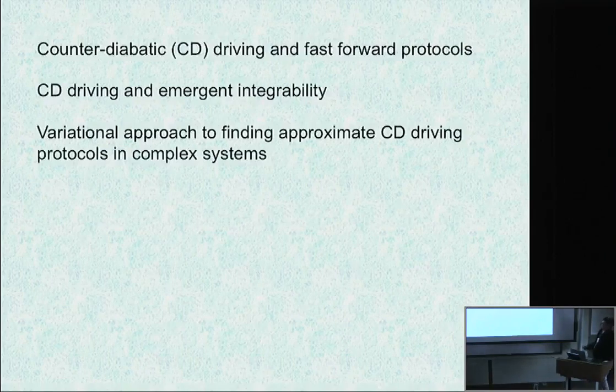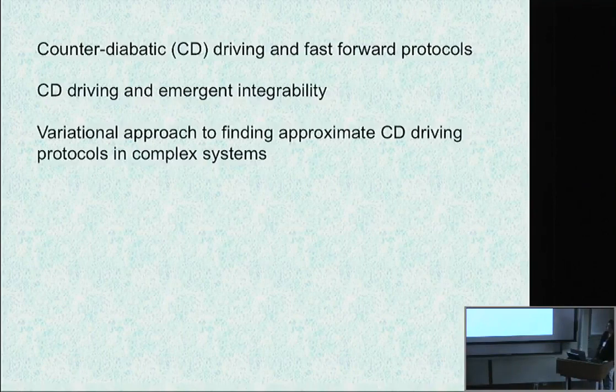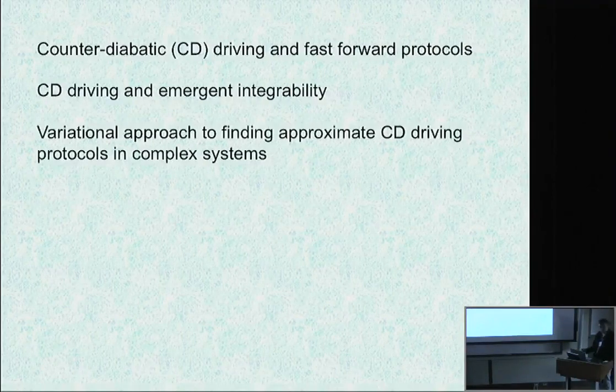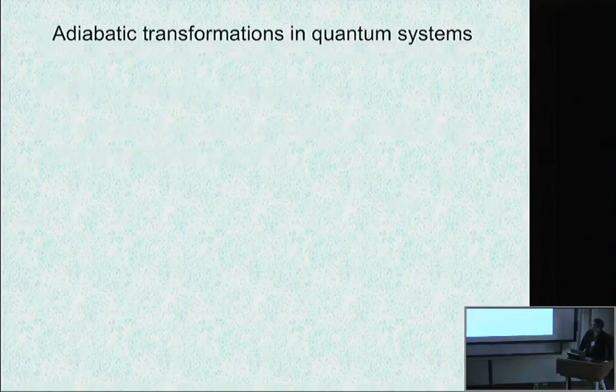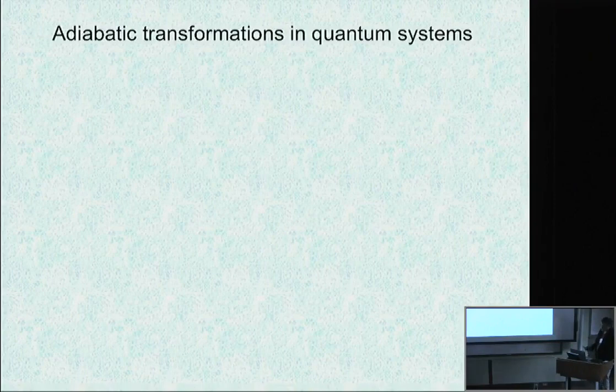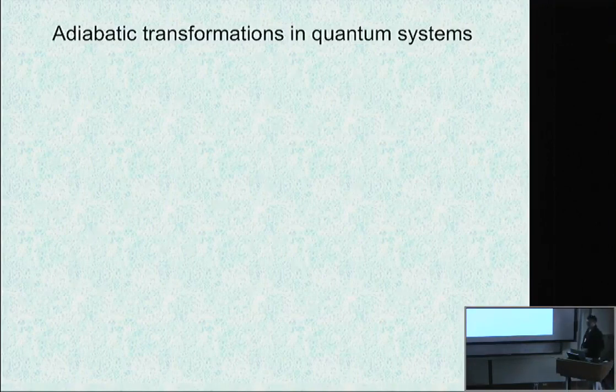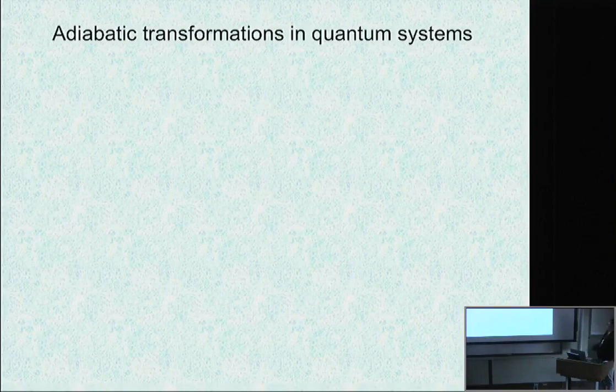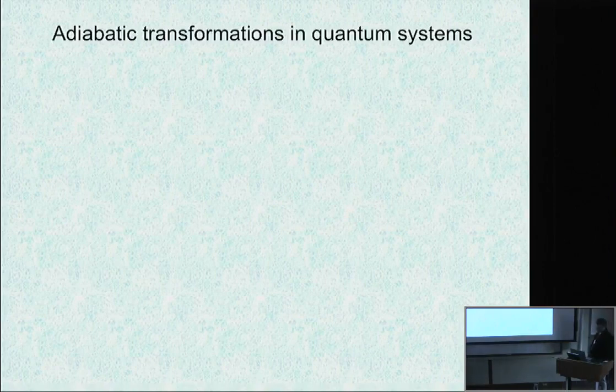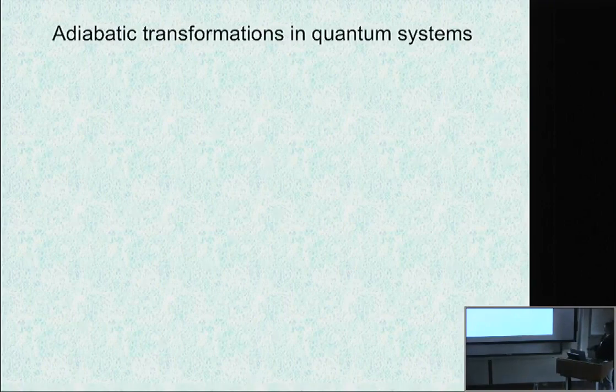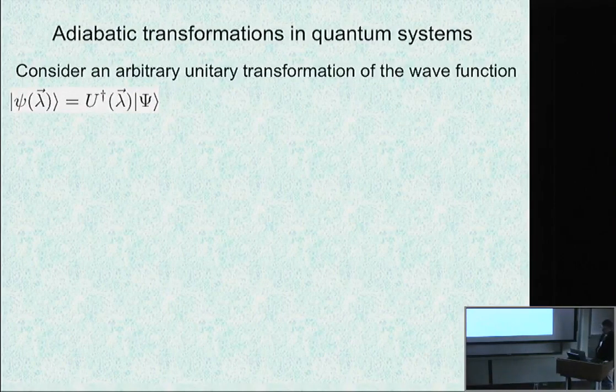I'll try to show some formulas and then pictures. If formulas are too heavy, just ignore them. I'm trying with each iteration to reduce number of formulas, increase number of pictures. This thing I think should be part of any course in quantum and classical mechanics, but it's not. Let me go through what adiabatic transformations in quantum systems are.